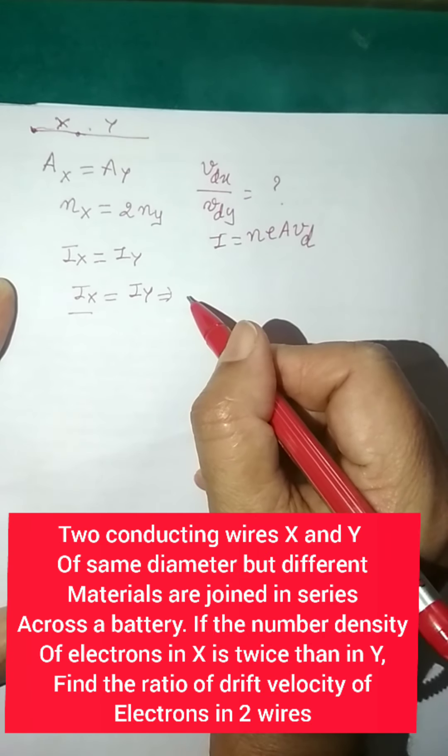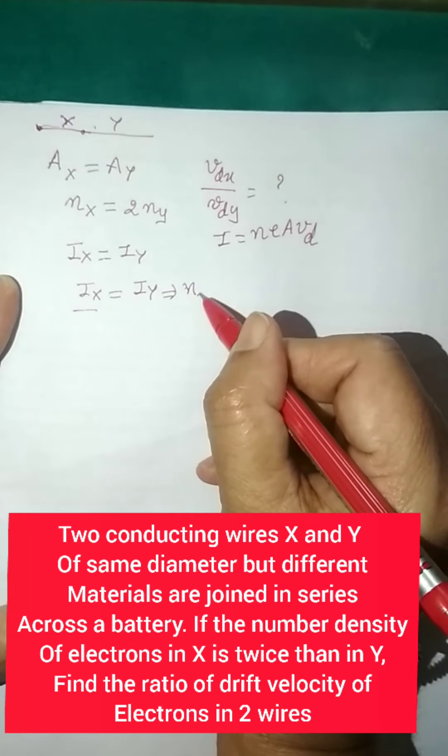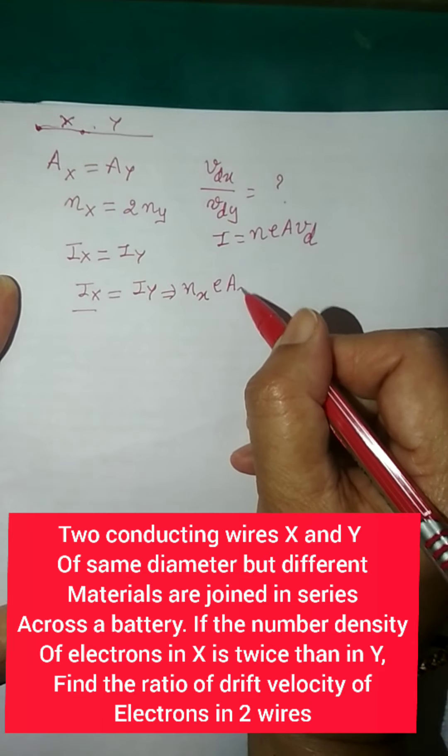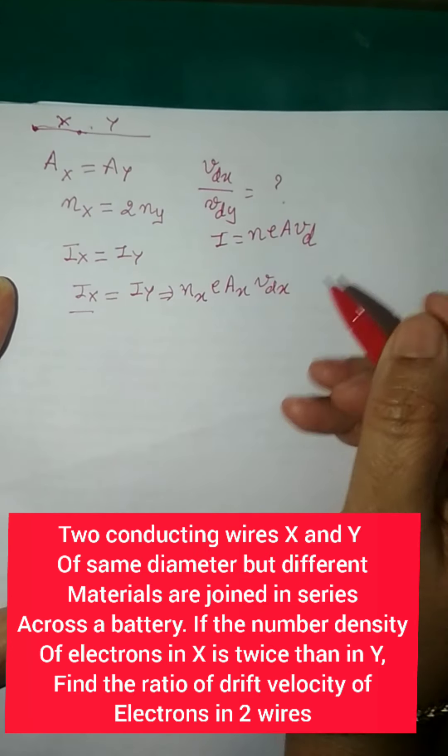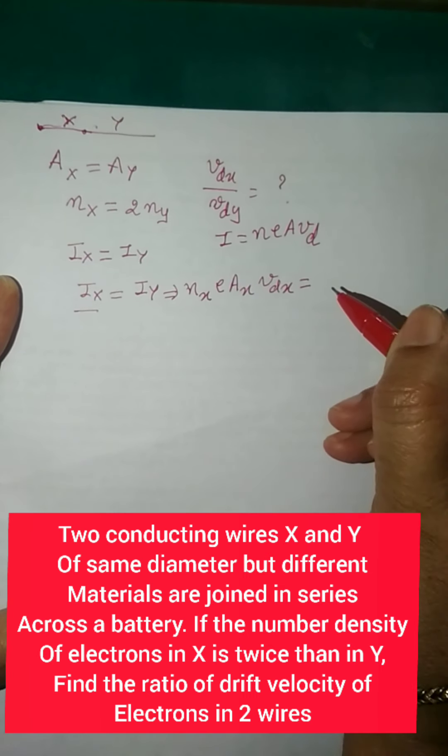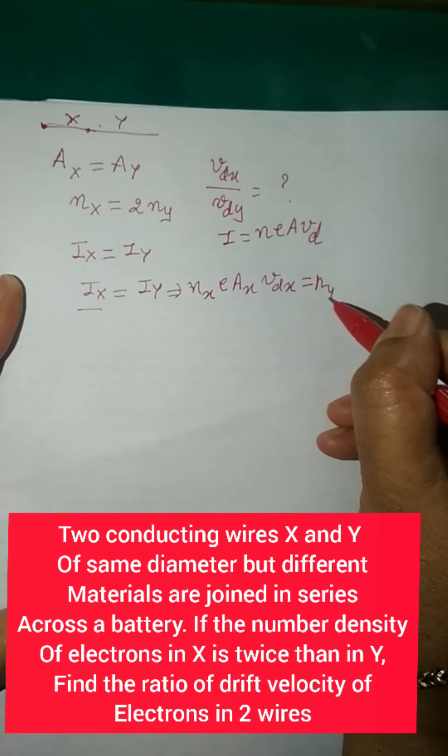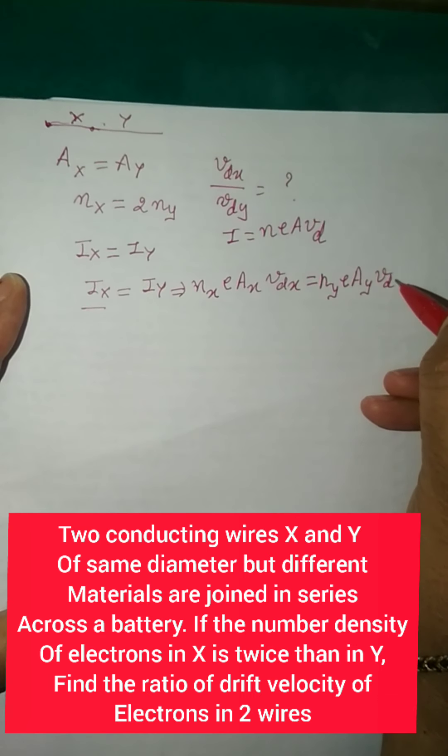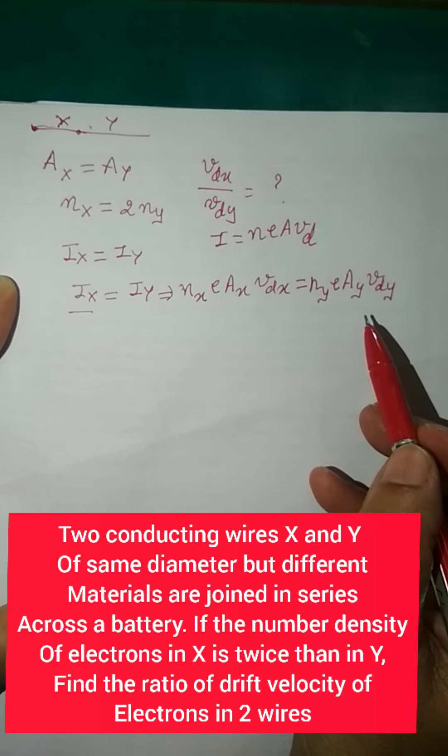So what I will get: I will get that means my nx, e is same, and Ax and Vdx. This will be equal to ny, e is constant, and this is Ay and Vdy. So being the current equal, I have just substituted the values.